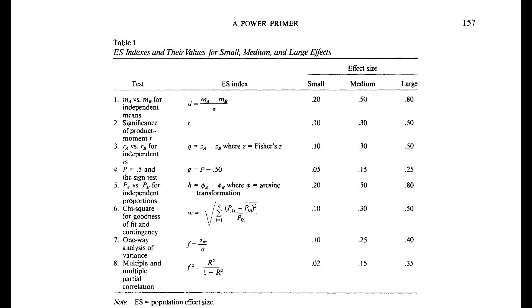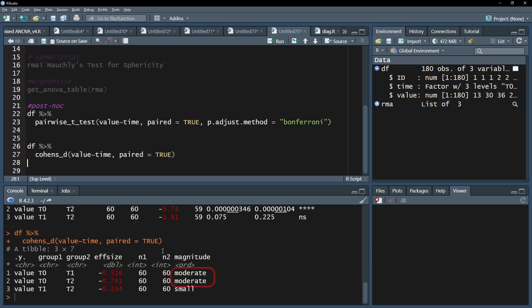If the effect size exceeds 0.2, it is a small effect. If it exceeds 0.5, it is a medium effect, and if it exceeds 0.8, it can be classified as a large effect.